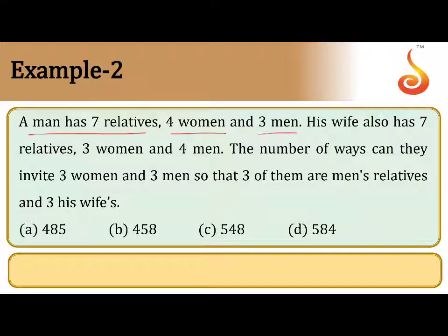A man has 7 relatives, 4 women and 3 men. His wife also has 7 relatives, 3 women and 4 men.